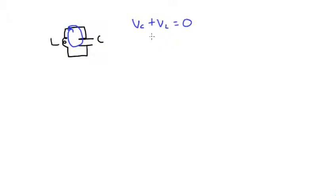And then if we write the voltage for the capacitor, which is the charge on the capacitor Q over its capacitance C, plus the voltage across the inductor, which is the inductance L times di dt, then that's equal to zero.